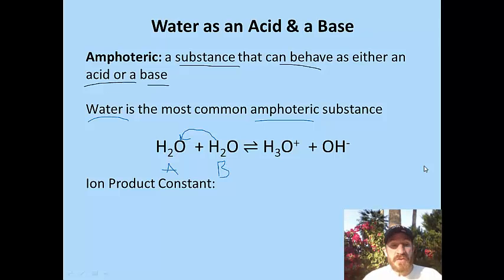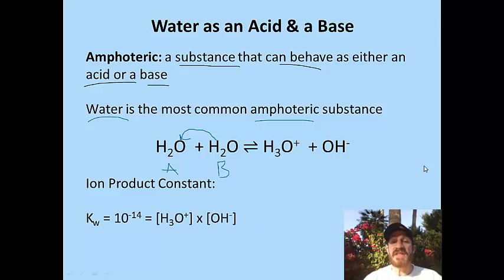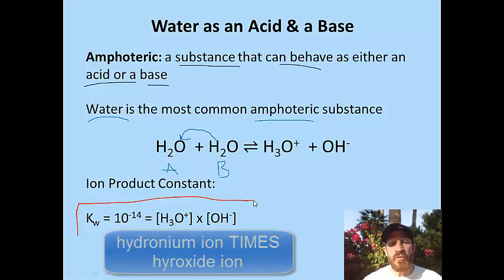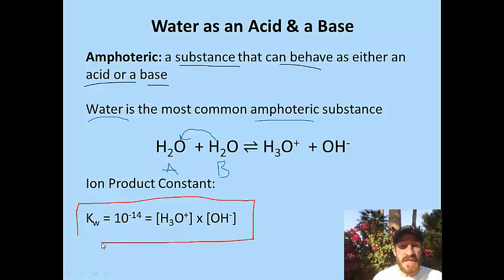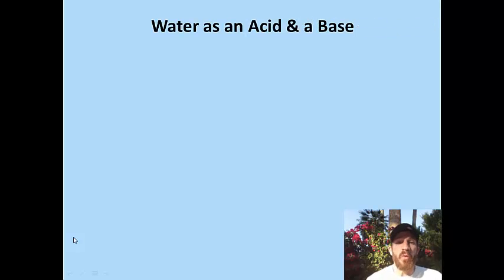Something else that may be familiar is the ion product constant. We've used this formula before: Kw equals 10 to the minus 14, which equals the hydronium ion concentration times the hydroxide ion concentration. This formula comes from the reaction of hydroxide and hydronium reacting together. Let's look at some reactions where water acts as both an acid and base when it's not with water.